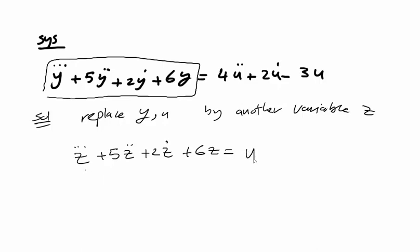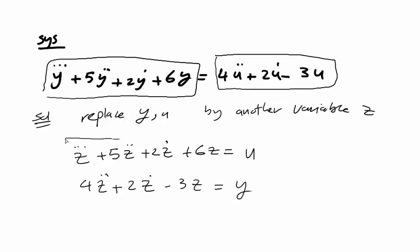The second equation: you replace u by z, making 4z double dot plus 2z dot minus 3z equal to the dependent variable y. So we make these two equations, just replacing y and u in my original differential equation.